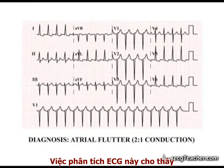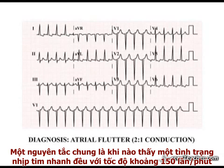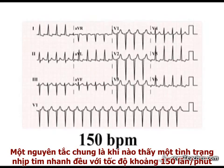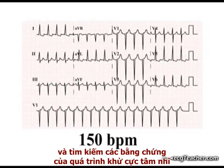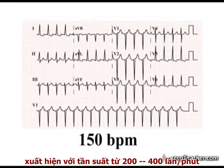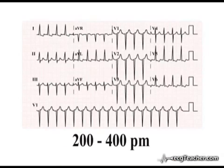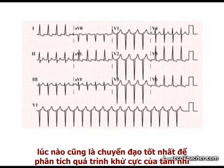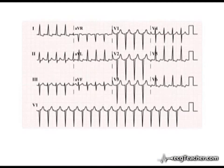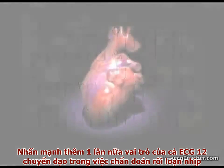Analysis of this ECG shows how easily one can miss this diagnosis. As a general principle, when faced with a regular tachycardia demonstrating a rate of or close to 150 beats per minute, always examine the ECG closely for flutter waves — any evidence of atrial depolarization occurring at a rate in the region of 200 to 400 times per minute. This ECG also emphasizes the fact that lead 2 is not always the best place to analyze atrial depolarization, highlighting again the value of a full 12-lead ECG in the diagnosis of arrhythmias.